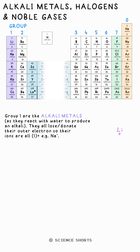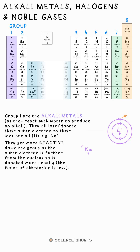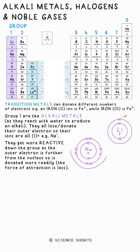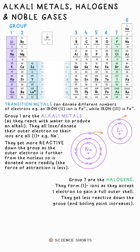The atoms in group one are called the alkali metals. They all have one electron in their outer shell, which they give away — donate — when they bond to something. The further down the group you go, the further that outer electron is from the nucleus. This means the metals get more reactive as you go down the group.